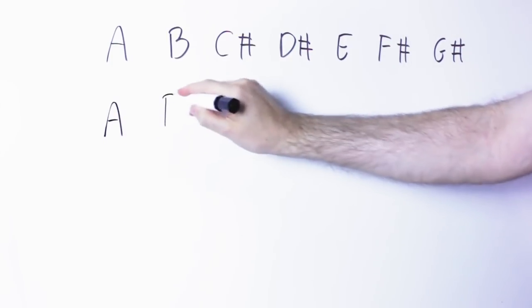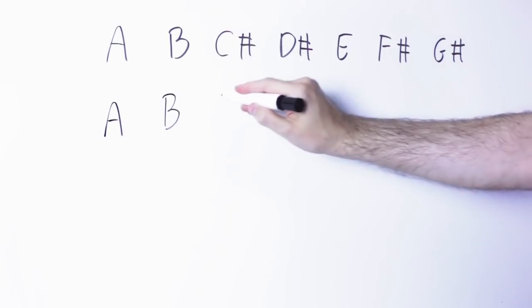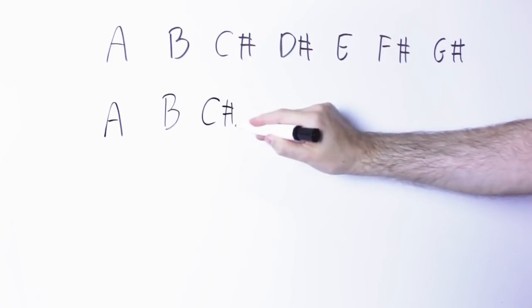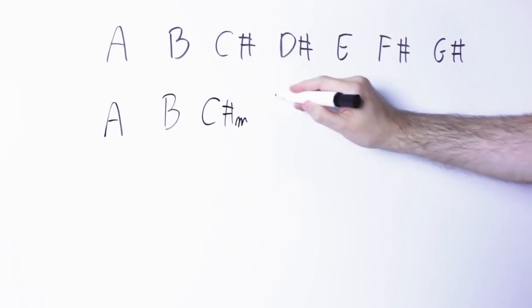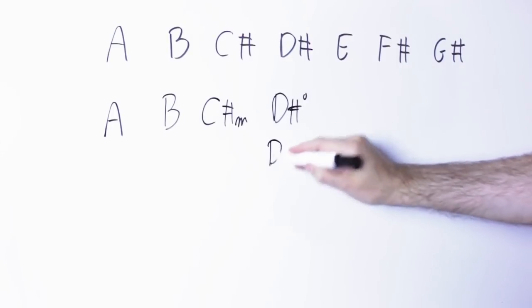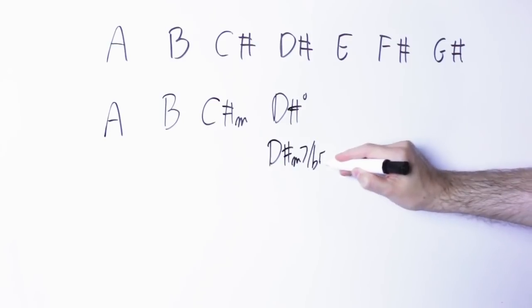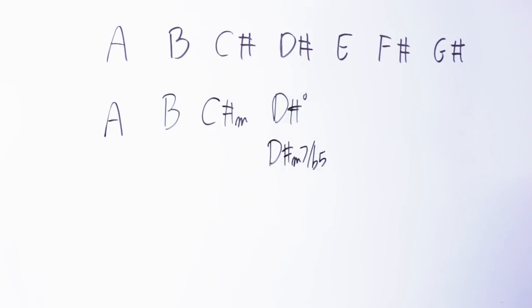On the second note I can build another major triad, B, D sharp, F sharp, B major triad. On the third note, C sharp, I can build a minor triad: C sharp, E, G sharp. On the fourth note I have a diminished triad, D sharp, F sharp, A. And if I wanted to add the seventh I would have a D sharp minor seventh flat five: D sharp, F sharp, A, C sharp. We're going to see this later, it's interesting.